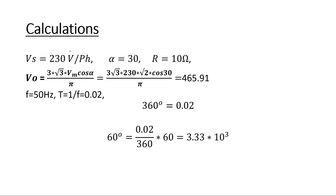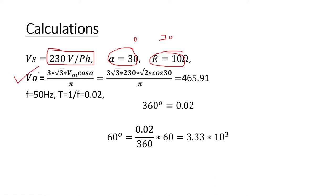For calculations, our input voltage is 230 volts RMS, face-to-face (line-to-line). We operate at alpha equal to 30 degrees. The output voltage formula for a three-phase rectifier is 3√3 × Vm × cos(alpha) / pi. Here Vm is the maximum value, so Vm = 230 × √2. With cos(30°), the mean output voltage comes to 465.91 V, which we will verify in MATLAB.